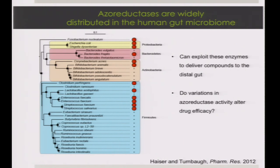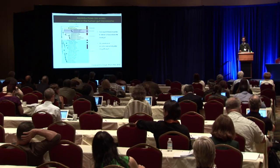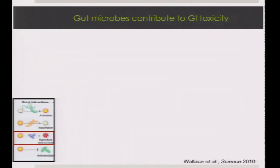This phylogenetic tree makes the point that azoreductase is not restricted to one type of bacteria — experimentally validated enzymes are found across a wide range of bacterial phyla including Firmicutes, Actinobacteria, Bacteroidetes, Proteobacteria, and one Fusobacterium. Interestingly, these same bonds are found in tattoo ink, so you can find these enzymes by plating with tattoo ink in agar. These enzymes have been exploited to locally deliver other drugs, yet we still know very little about whether inter-individual variation in efficacy or toxicity of these compounds is mediated by variation in the gut microbiome.